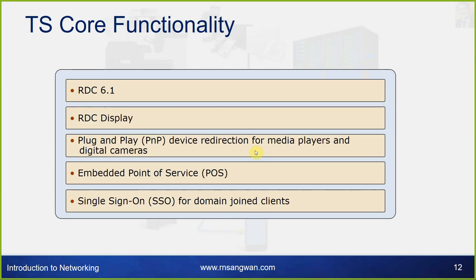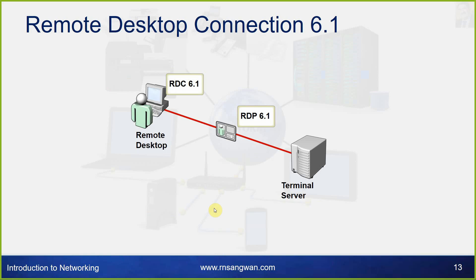Terminal service core functionality includes RDC 6.1 and RDC display, plug-and-play (PNP) device redirection for media players and digital cameras, embedded point-of-service (POS), and single sign-on (SSO) for domain-joined clients. Remote Desktop Connection 6.1 needs to be installed on the client that wants to access it, and the terminal server will allow this access.